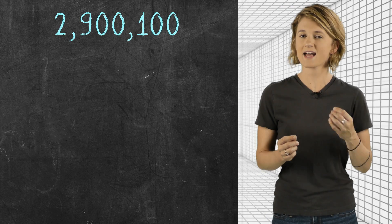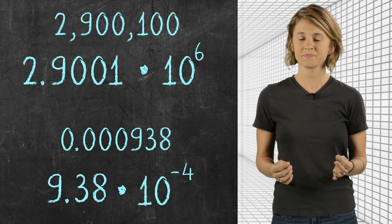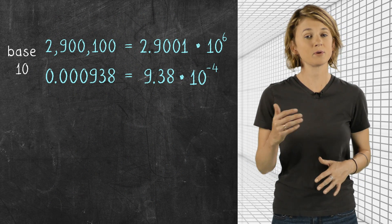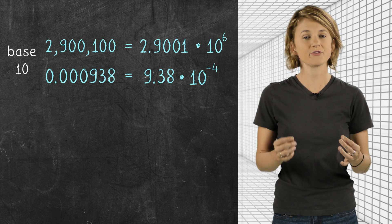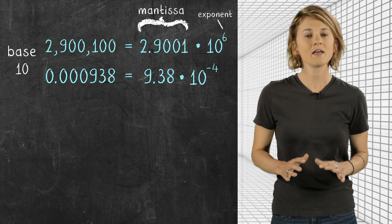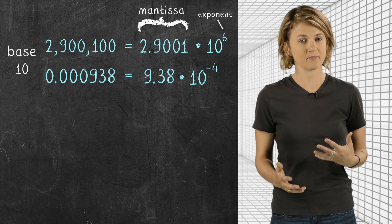You might have learned that it can be useful to write big numbers like this as this, and little numbers like this as this. In base 10, we can write any non-zero number as a number between 1 and 10, which is called the significant or mantissa, times 10 raised to a power. The exponent is positive for big numbers and negative for little numbers.